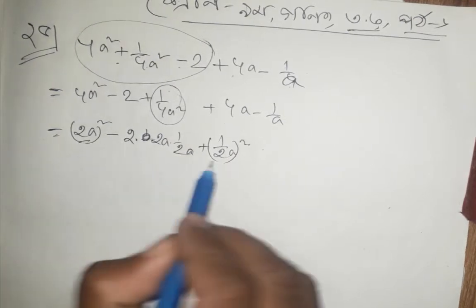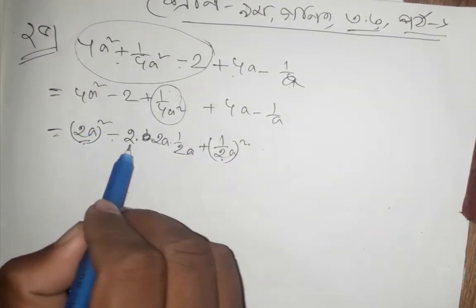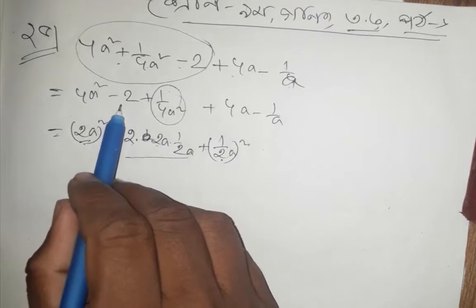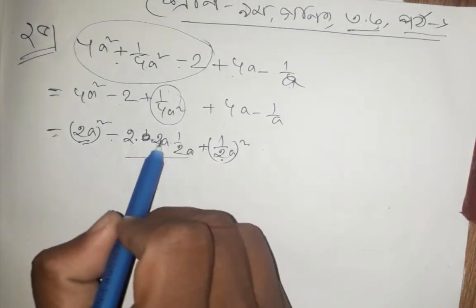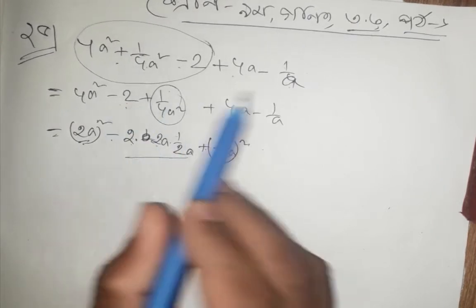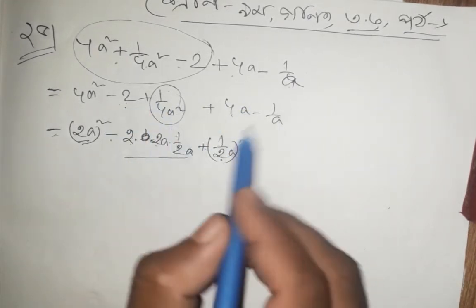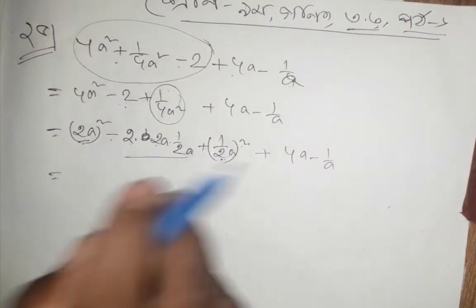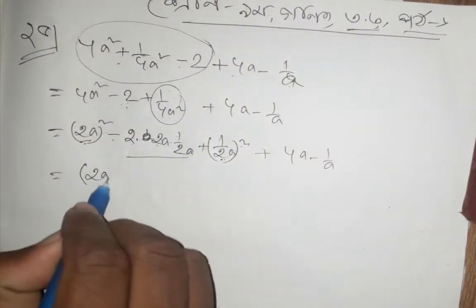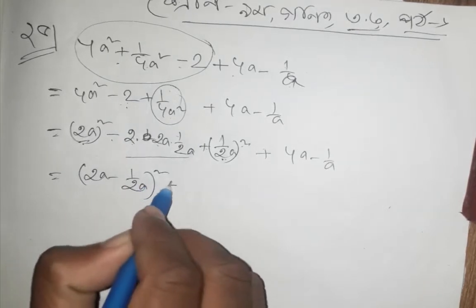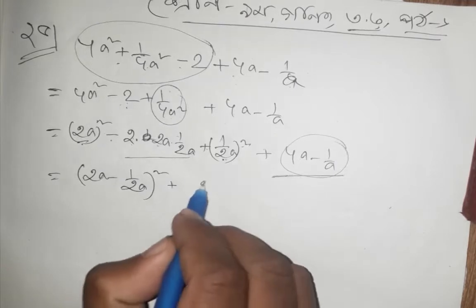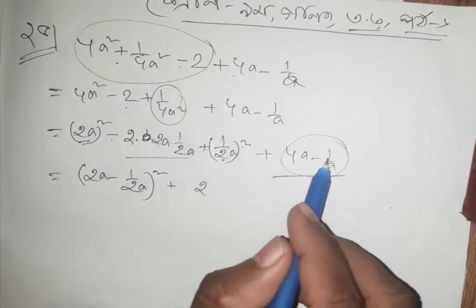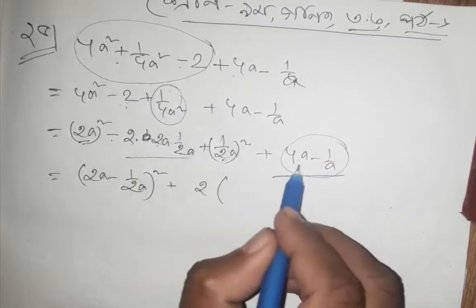What do we do? We have the identity a squared minus 2ab plus b squared. So the number we do is minus 2. This is 2a squared minus 2a squared. The 4a minus 1 is a square, and the 2 is b squared. We know that this is a squared minus 2ab plus b squared.